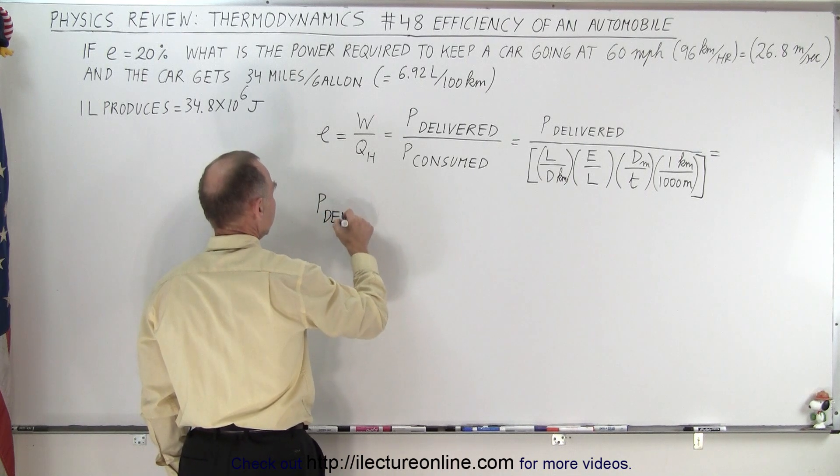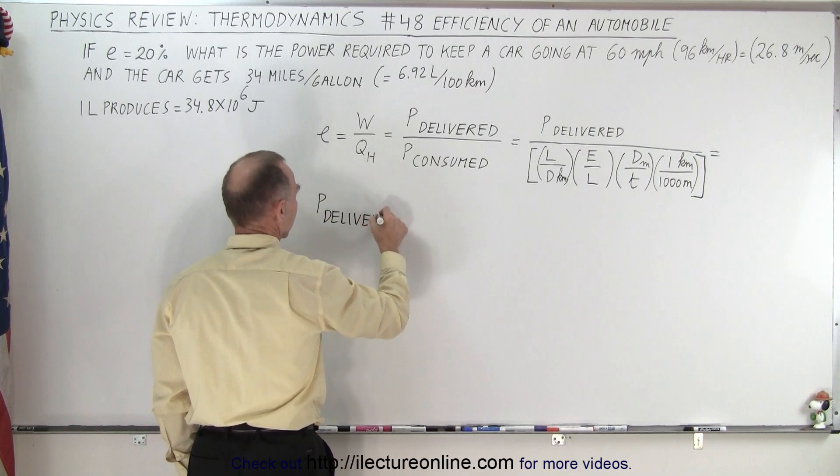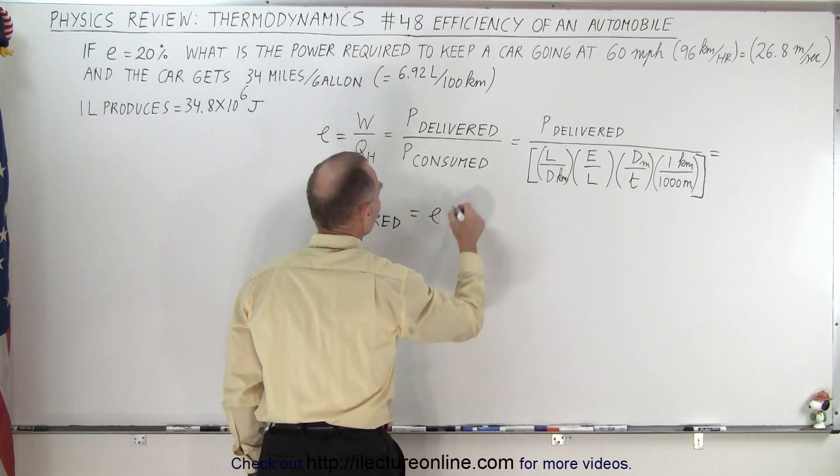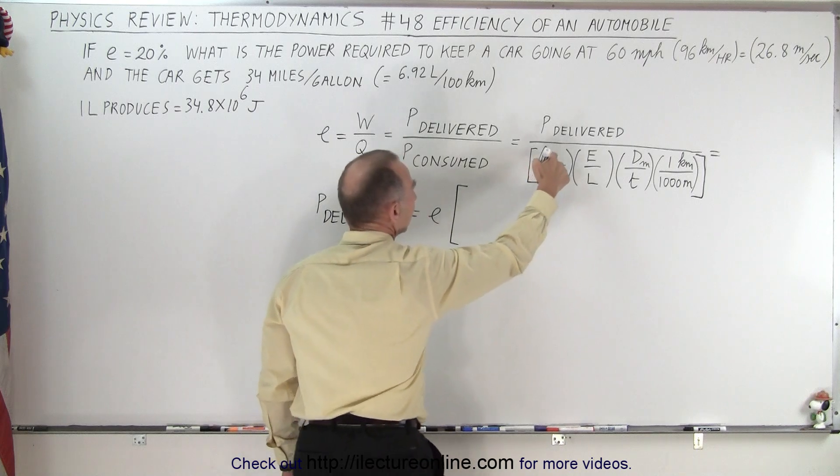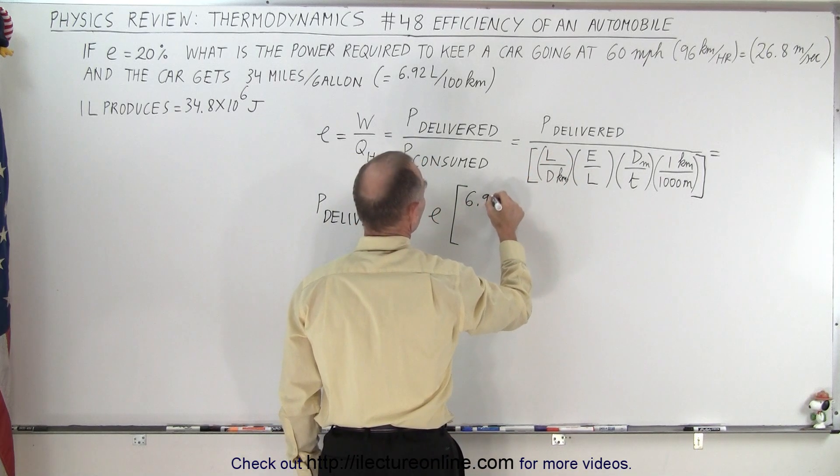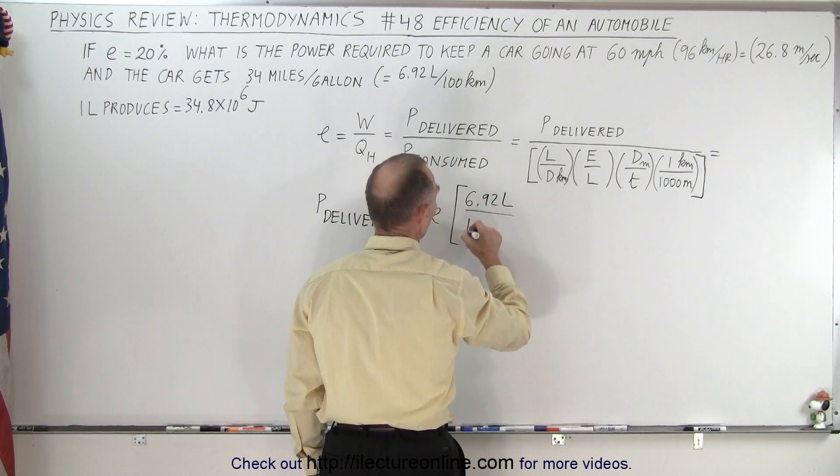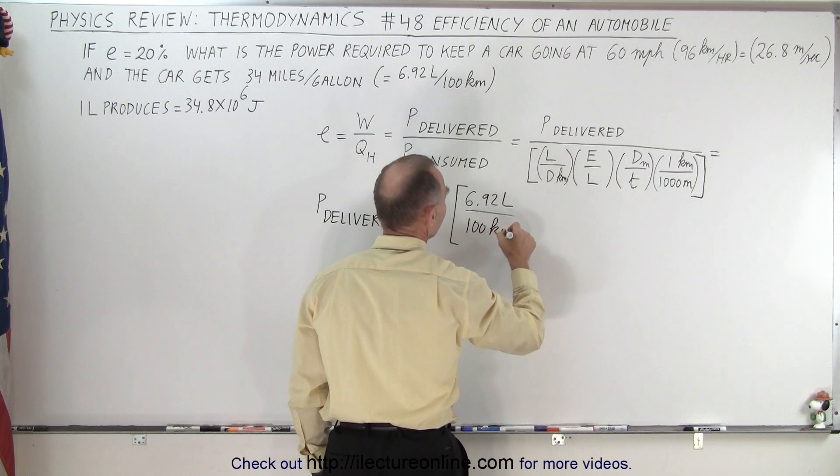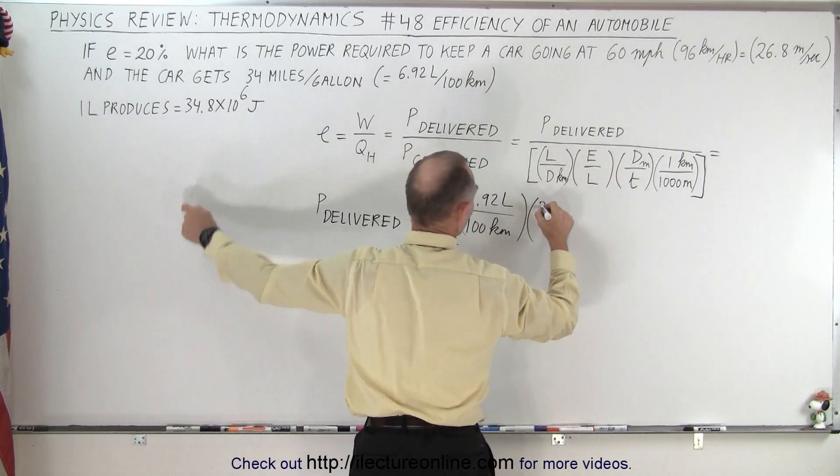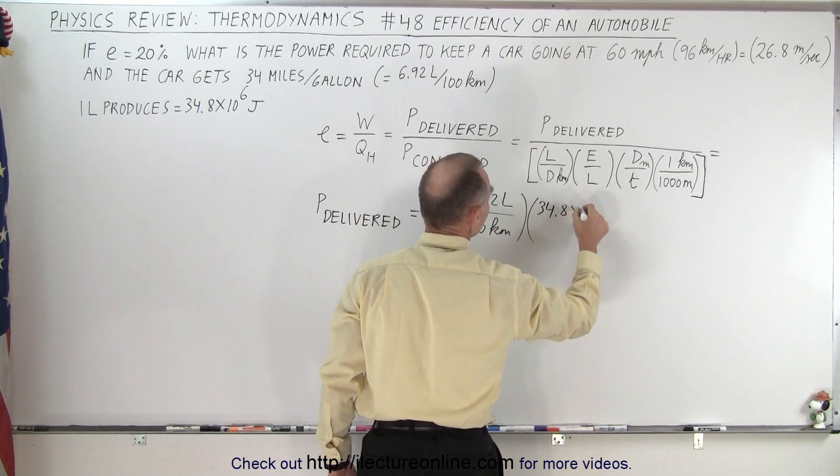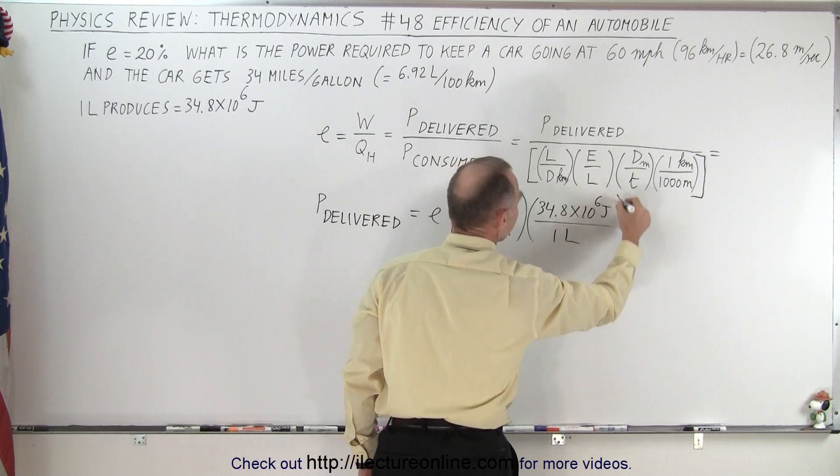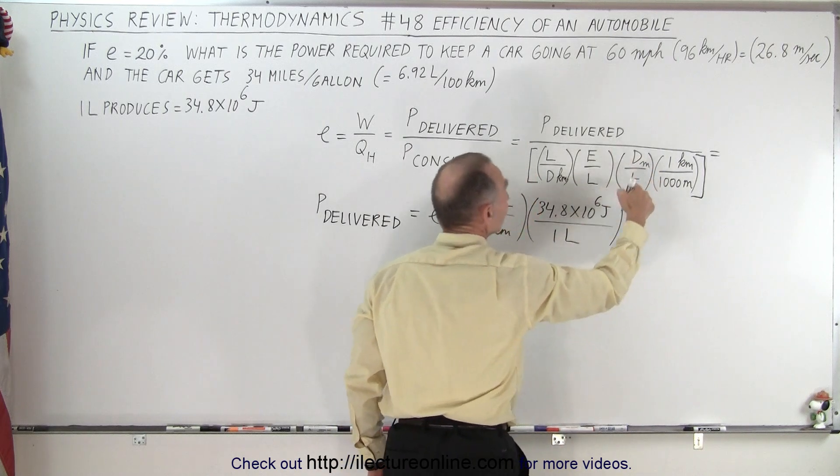Power delivered is equal to the efficiency times liters over distance. So in this case, we got 6.92 liters divided by the distance of 100 kilometers. We multiply times energy per liter, which we get over there. So that's 34.8 times 10 to the sixth joules per one liter.